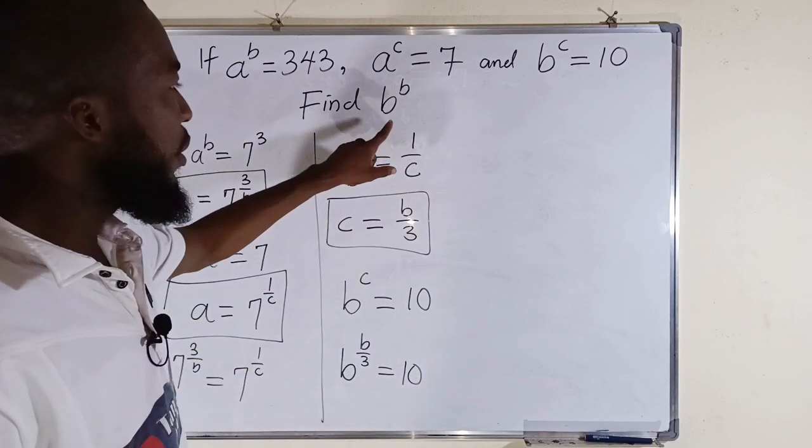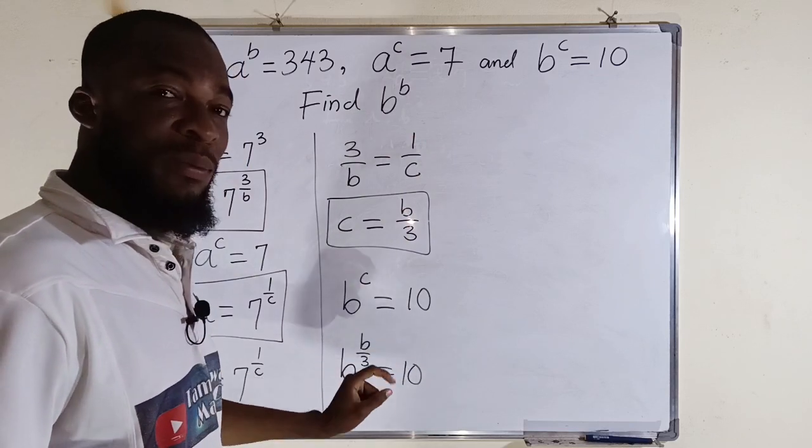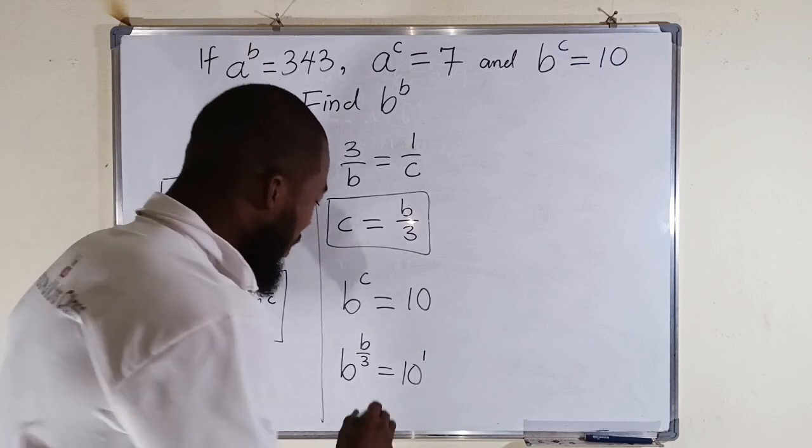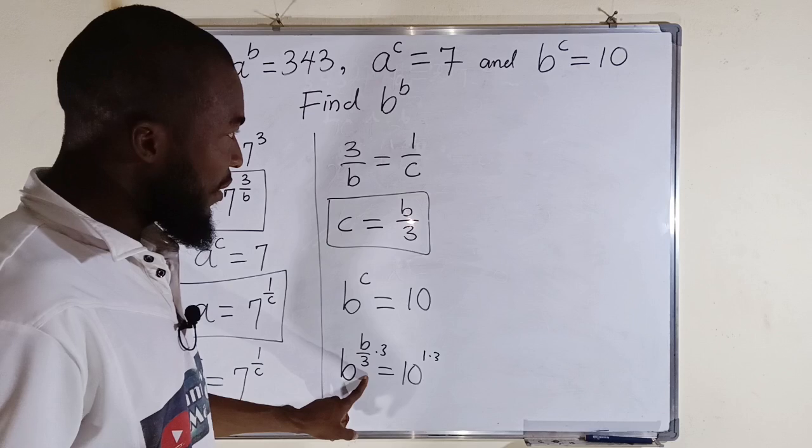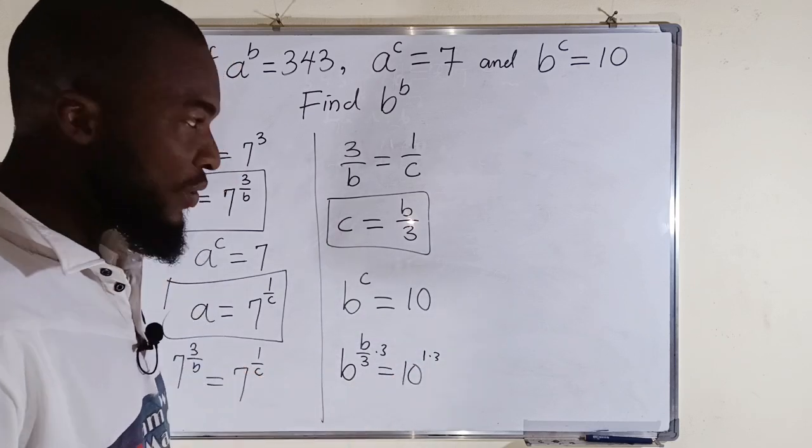What are we looking for? We are looking for b to the power of b. Therefore, we can multiply the exponents by 3. You know naturally this has an exponent of 1. If we multiply this by 3, we have to multiply this by 3. This 3 will cancel this, and we have 1 times 3 to the right-hand side.